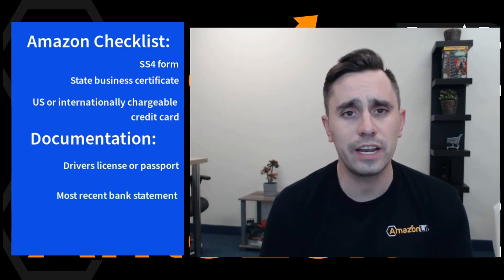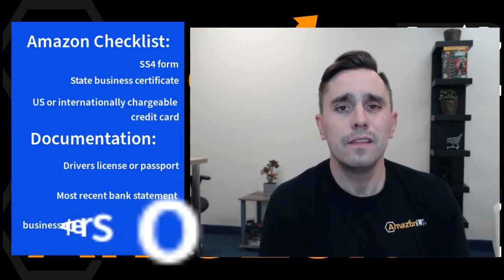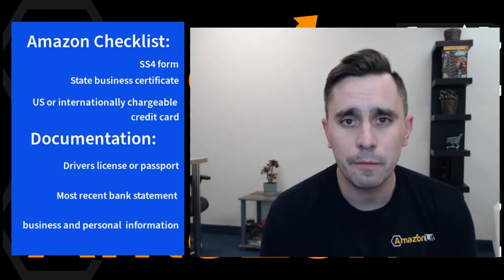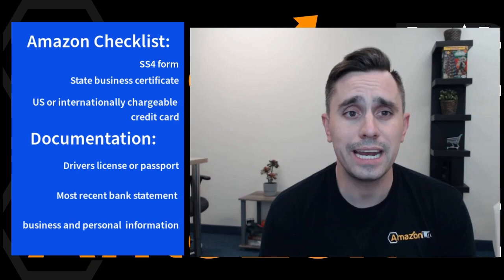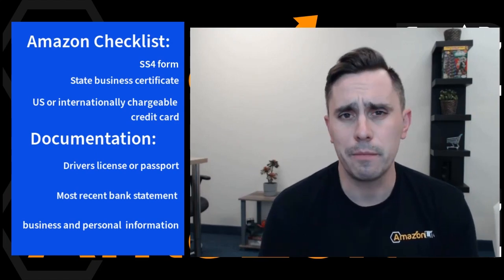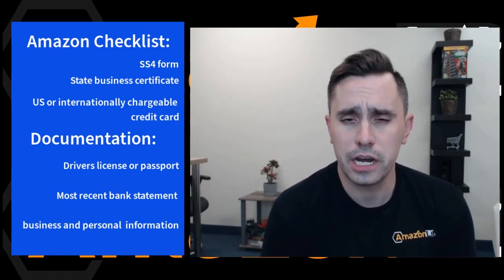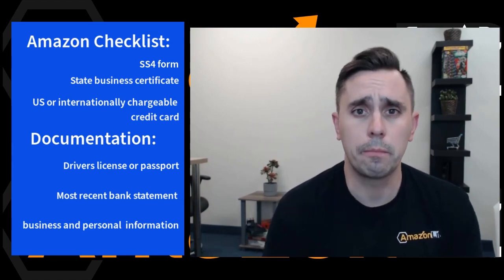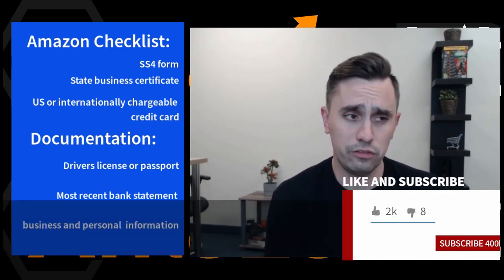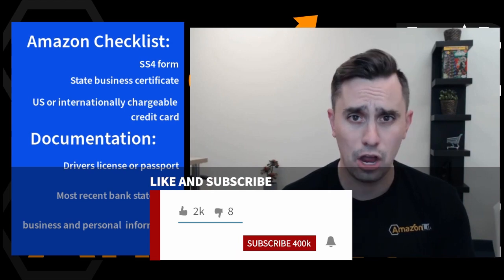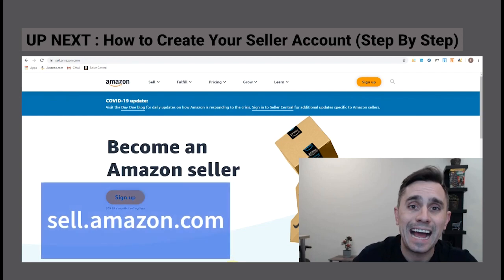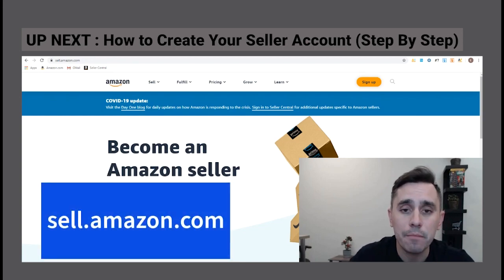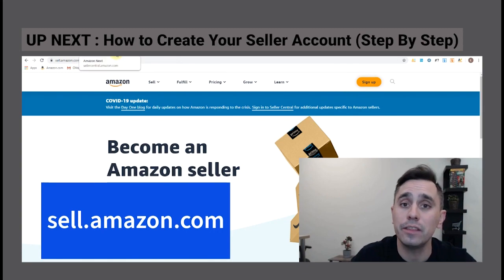You're also going to need the regular stuff like your business name, the address of your business, your own personal address where you're located, and some basic information about your business, like if you're the beneficiary owner or if there are any other partners that are part of that business. Once you have all that lined up, we'll get this done in 10 to 15 minutes. We're going to go to sell.amazon.com and click sign up to begin the process.